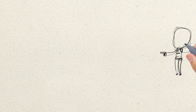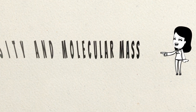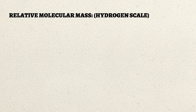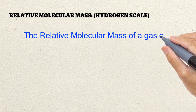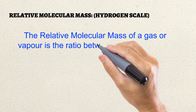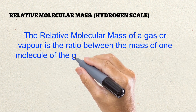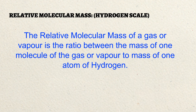In this class, we shall discuss about the relationship between the molecular mass and the vapour density. The relative molecular mass on the hydrogen scale is the relationship between the mass of one molecule of the gas or vapour to the mass of one atom of hydrogen.